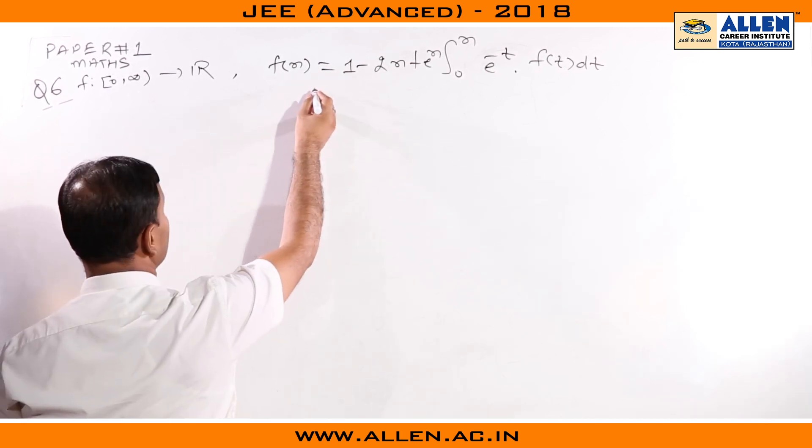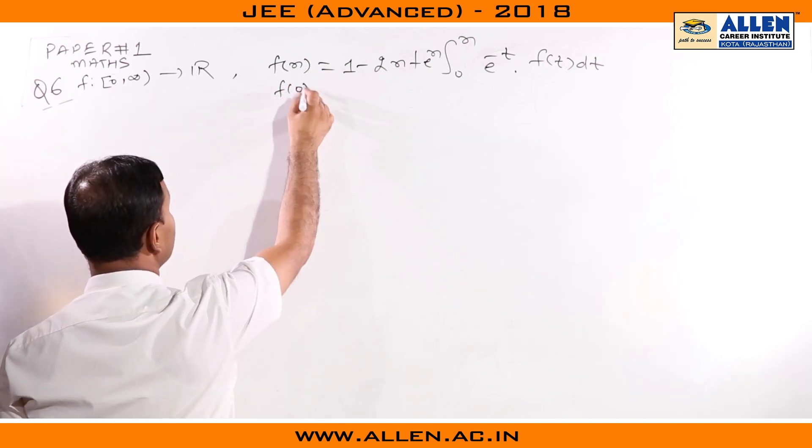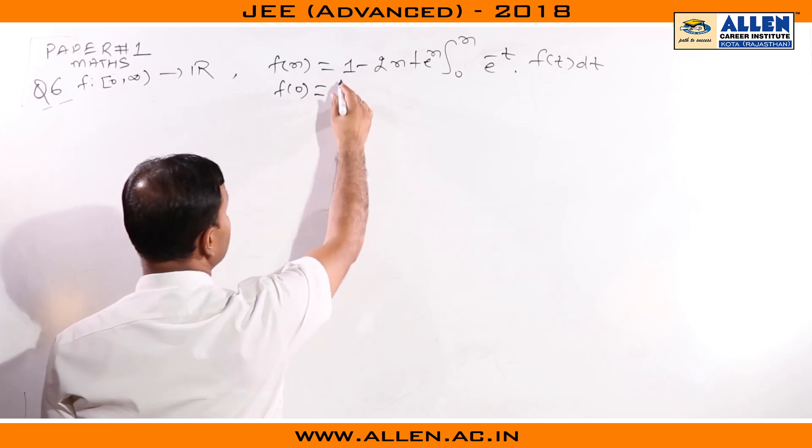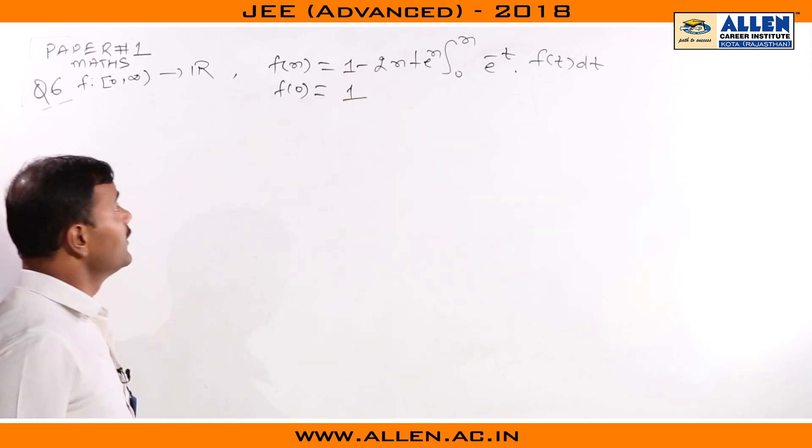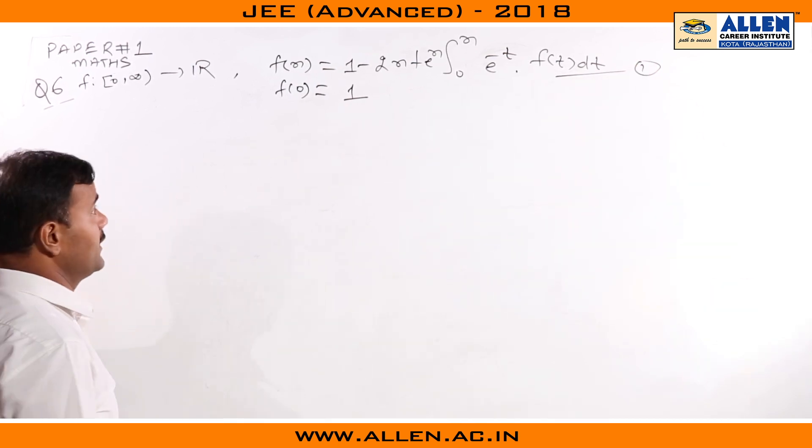We see that 0 is in the domain of the function, so if we put x=0, we get the value of function at 0 equal to 1. Now if we differentiate both sides with respect to x, applying product rule and Leibniz rule...